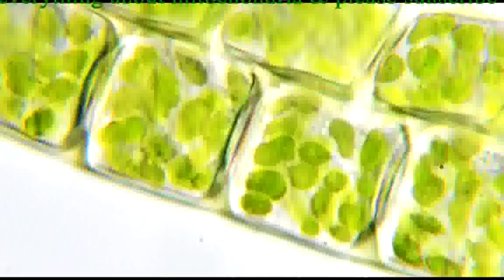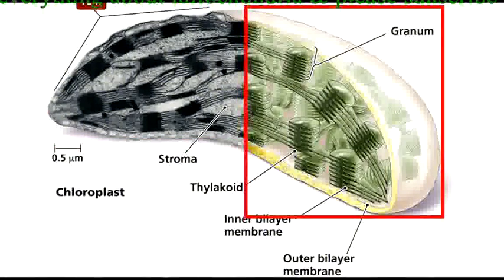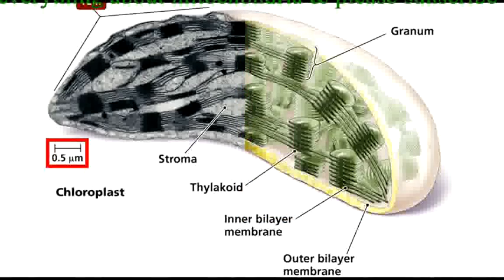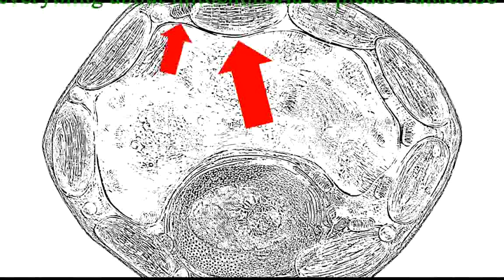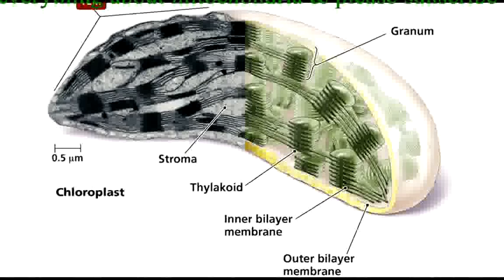Let's examine a single chloroplast in more detail. The left side of this picture is an electron micrograph of a chloroplast, and the right side is a computerized model. Notice that the scale is set to 0.5 micrometers. Thus, chloroplasts are larger than mitochondria. However, mitochondria and chloroplasts have many similarities. Let's look at some of the important features of chloroplasts.